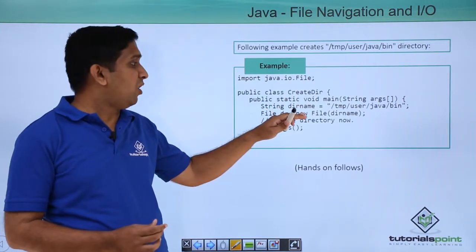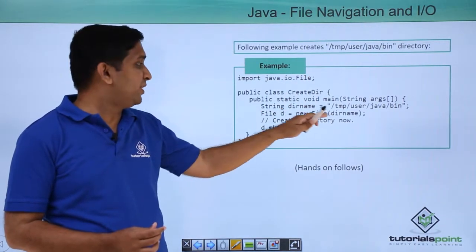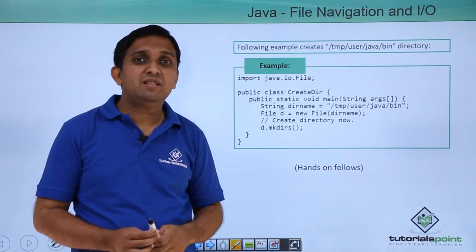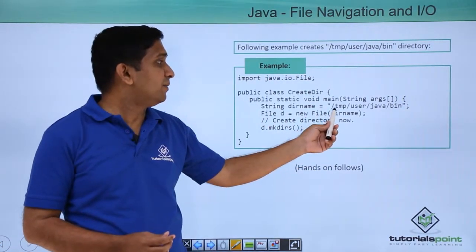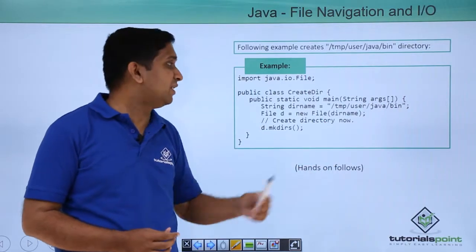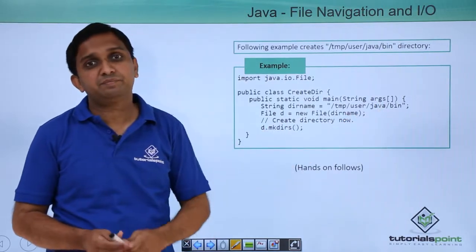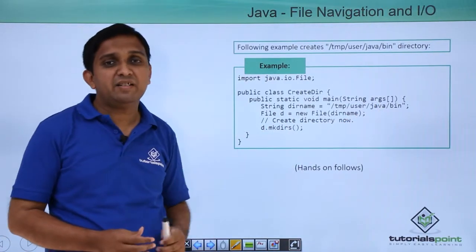I am creating one string object. From that string object, one file object is created and I am calling the mkdirs method, which will create the whole path. It will create all the directories which are mentioned here: tmp-users-java-bin. We will implement this practically.